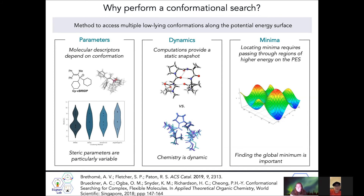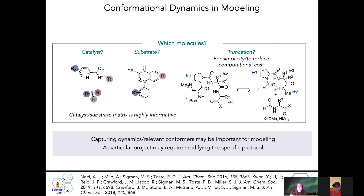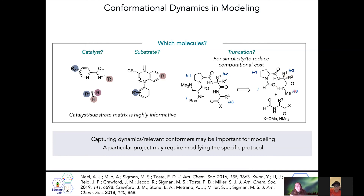Laurie's final question: how do you know when you've truncated too much or too little? It's really case dependent. If you have a system that's very complex and would require a lot of time to compute, we'll try to pursue a truncation first — especially if we know that a particular structural element, when changed, leads to a really large change in the reaction output, as was the case for this system. We noticed that changing this residue had a large impact on the output, so we highlighted that area of the catalyst for parameterization. If that hadn't worked, we would have gone back and tried another way to consider the conformations of the full catalyst.